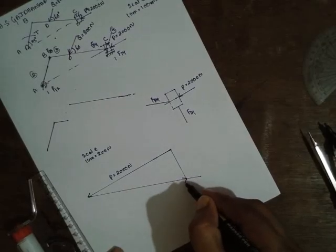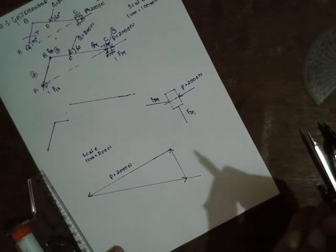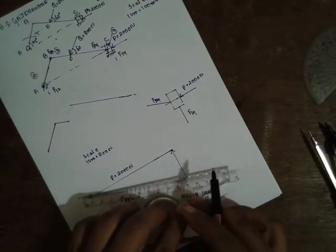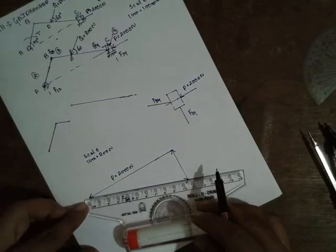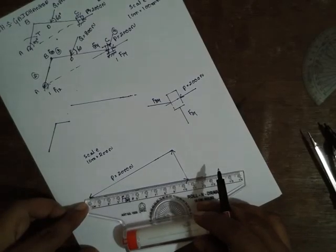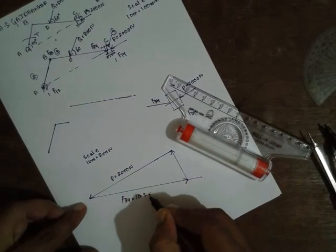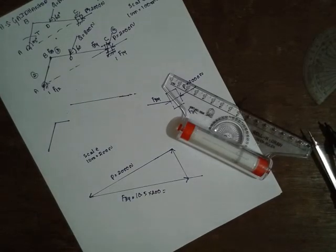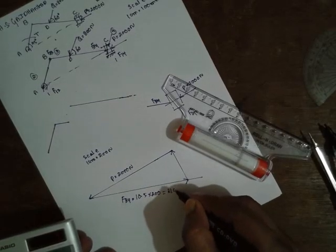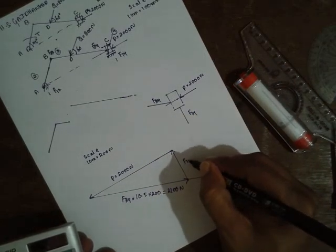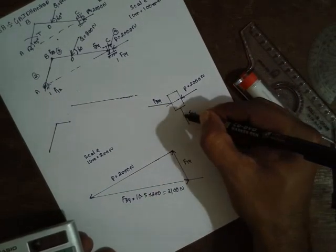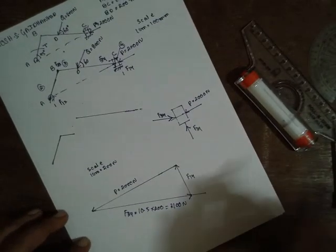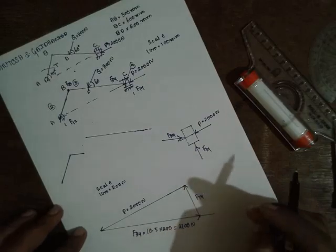This is P, nothing but 2000 N. Next, draw the line parallel to this one - this side we don't know the length. Draw the line with respect to this one in this way. You will get the force polygon. If the arrow is this side, the next arrow should be this side, next arrow should be this side. That is the concept of force polygon.